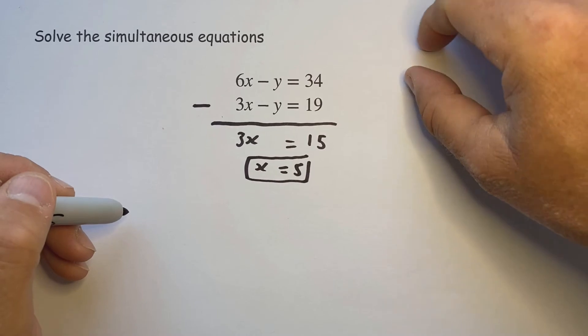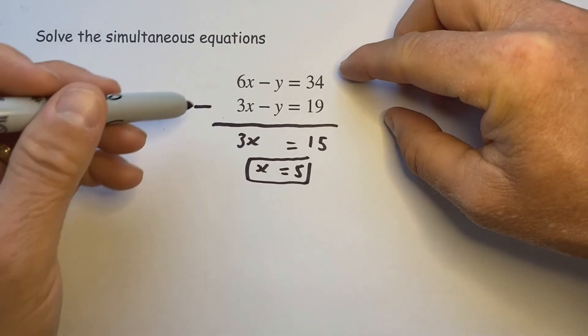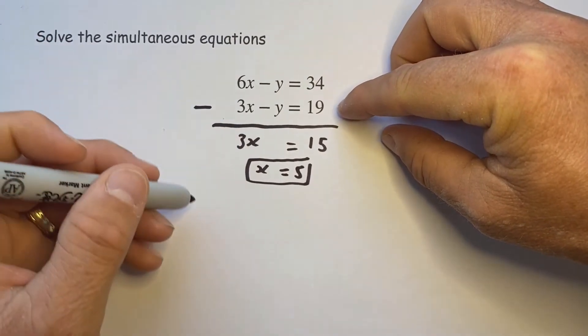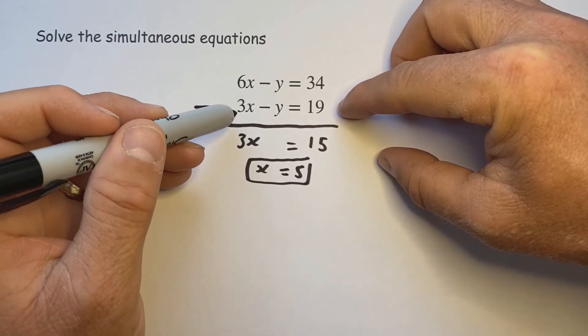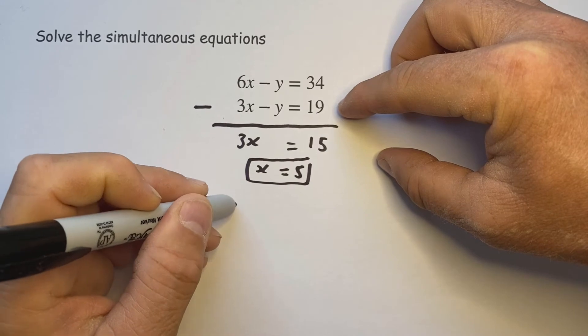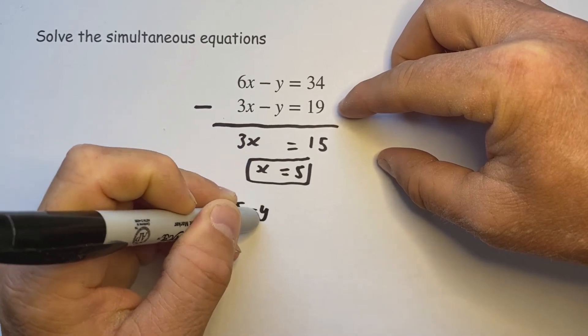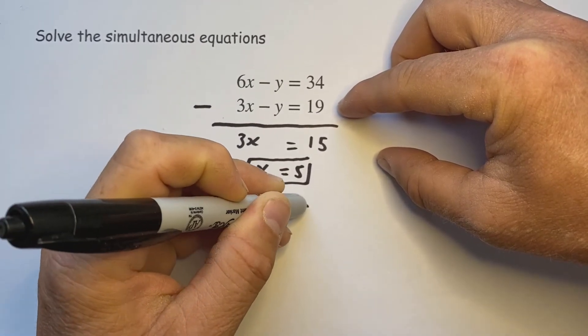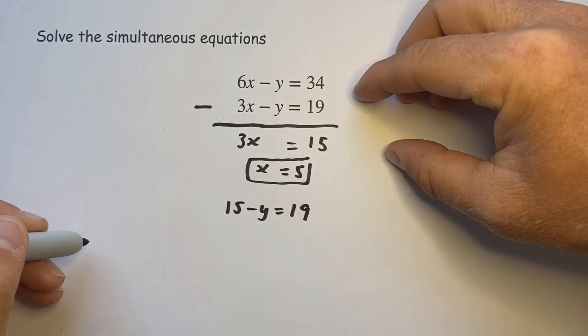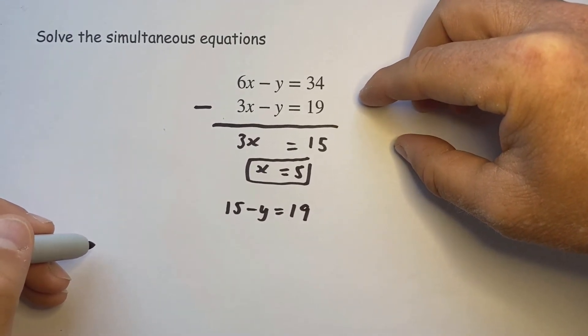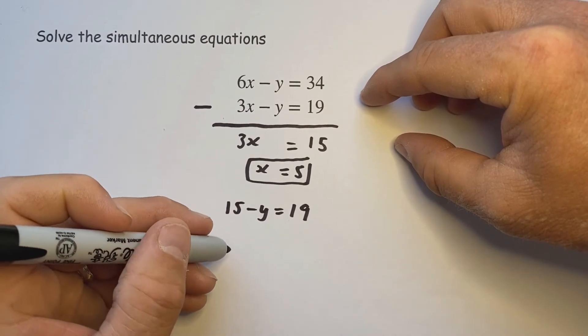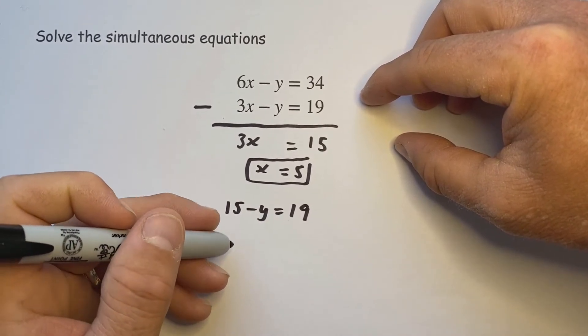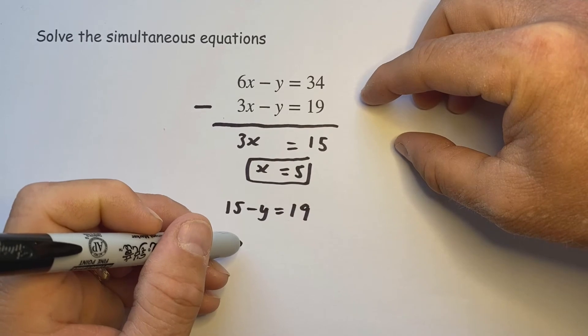Put it back into either of these two equations. Again the smaller numbers seem to be that second one so I'll put it into that one. Now this one's where it's more challenging because that minus sign. 3 times 5 is 15 minus y has to equal 19. Now there's many ways to do this and often on the board I would show you the different ways and you pick which way you prefer. However on the paper I'm just going to show the one method.